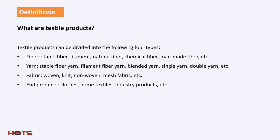How are textile products defined? Generally, they're divided into the following four categories: fiber, yarn, fabric, and actual end products, including such things as apparel, home textiles, decorative textiles, and similar products.